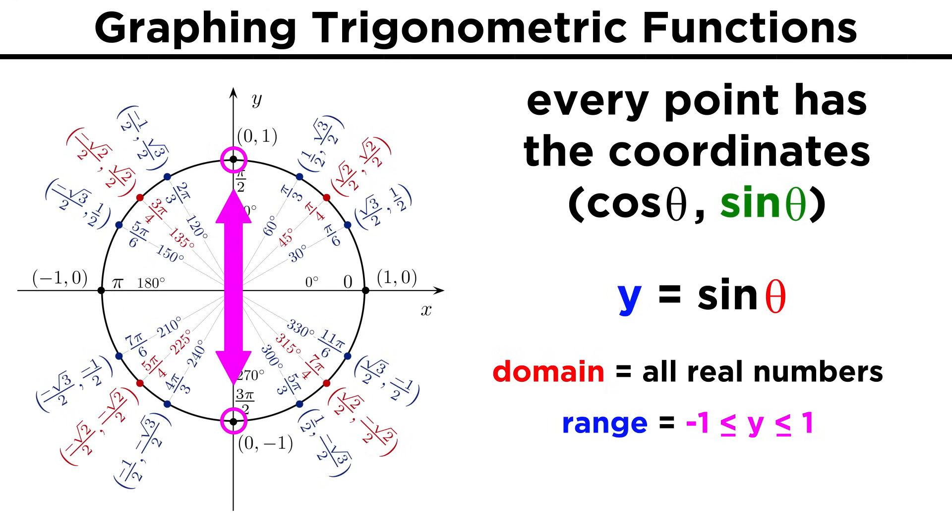But the range of the function is negative one to one, inclusive. Sine theta can only have values within this interval, as we can clearly see from the unit circle, as the y values of all of these points are somewhere in between negative one and one.